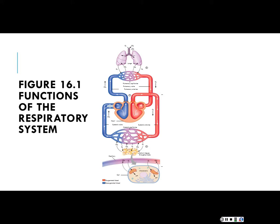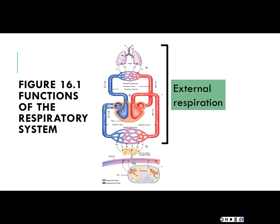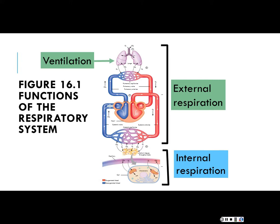If we simplify the function of the respiratory system, the first phase is called external respiration, where we're basically getting air from the atmosphere into your blood. Internal respiration occurs when there's exchange between the systemic capillaries and your body's tissues. We'll elaborate on external respiration with ventilation, which is just physically bringing air in and out of the lungs, and review the phases of inspiration and expiration.